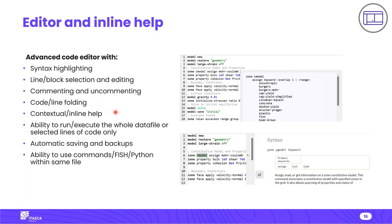FLAC 2D has a very powerful shared editor with syntax highlighting, line and block selection and editing, commenting and uncommenting, code folding, contextual inline help, and the ability to run the whole data file or only selected lines. FLAC 2D also does automatic saving of data files when you execute them, periodic backups, and you can use commands, FISH, and Python within the same file — though files using Python must have the extension .ui.